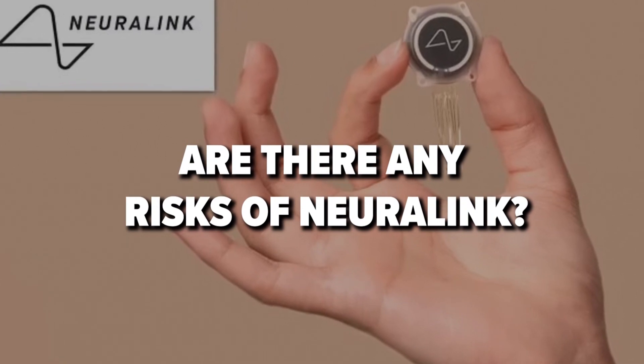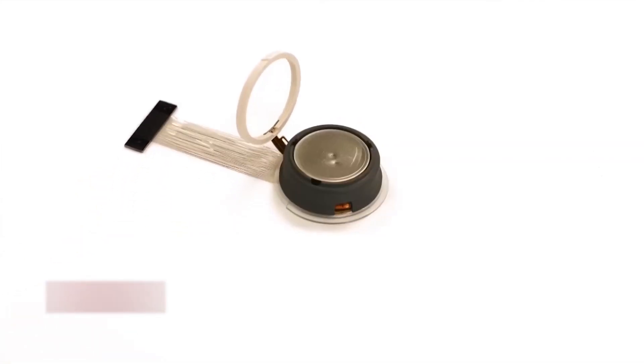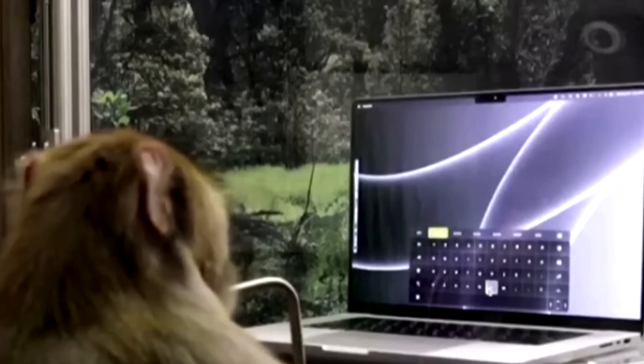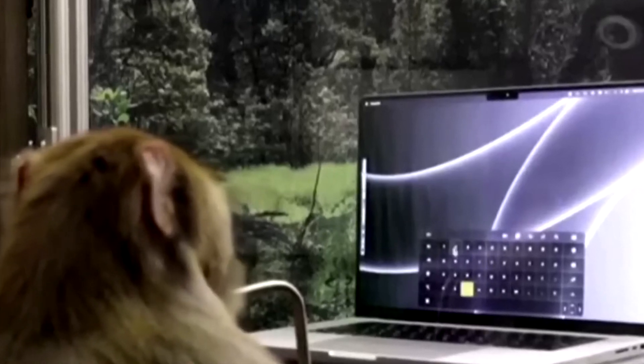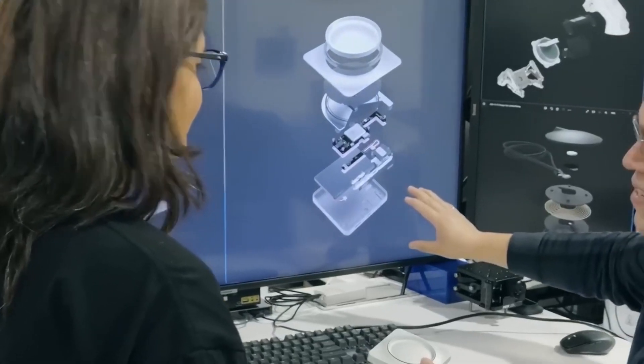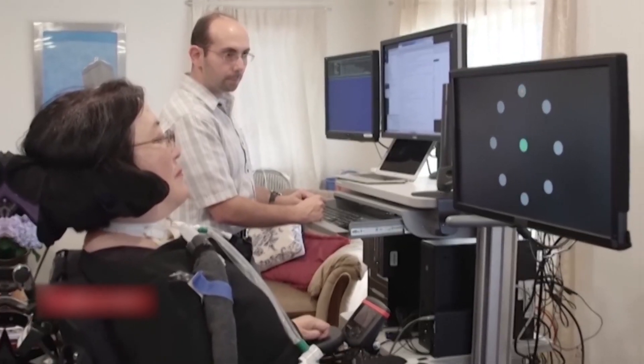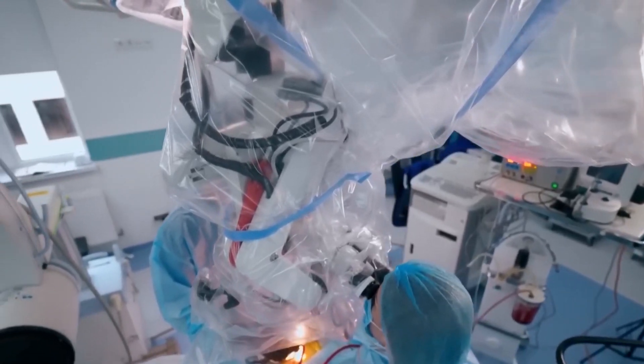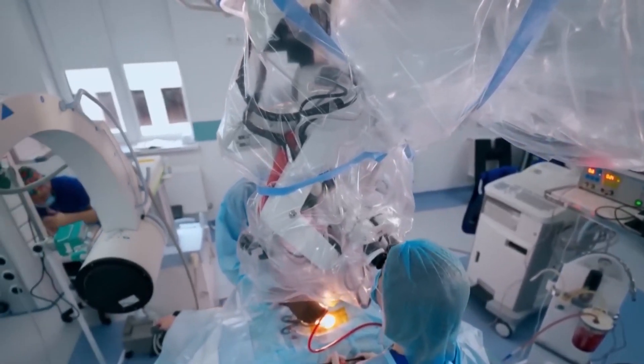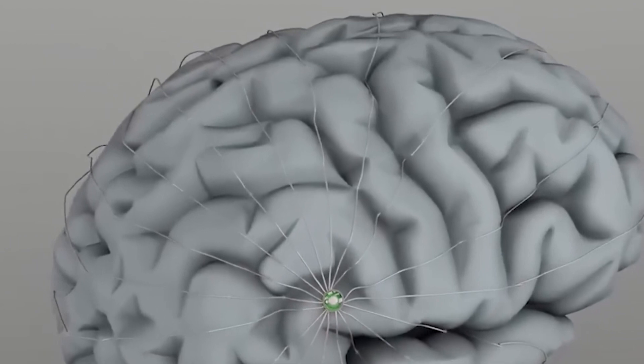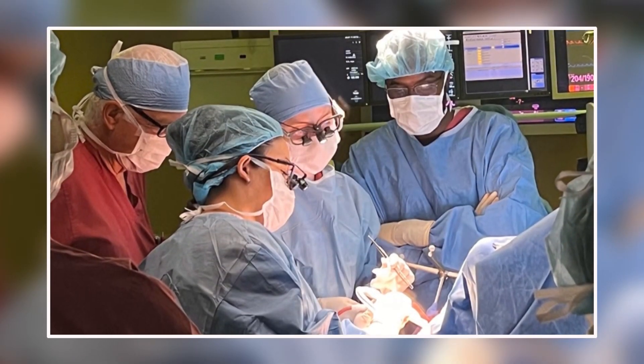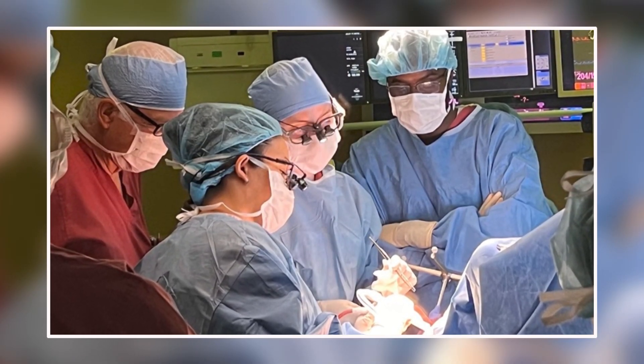Not everything about Neuralink can be sugar-coated. While the company's advancements in brain-computer interface technology hold incredible promise for the future, there are also ethical concerns, potential risks, and unanswered questions that need to be addressed. Despite the groundbreaking success of the first brain chip implantation, there remain some unknown risks. The need for neurological surgery itself presents a typical risk factor.